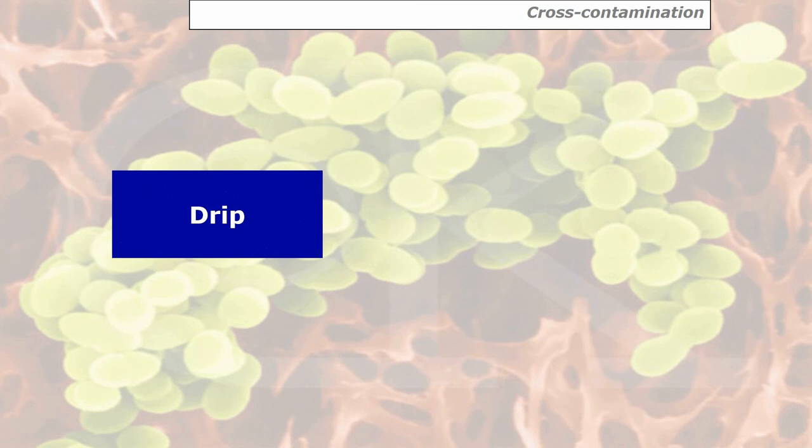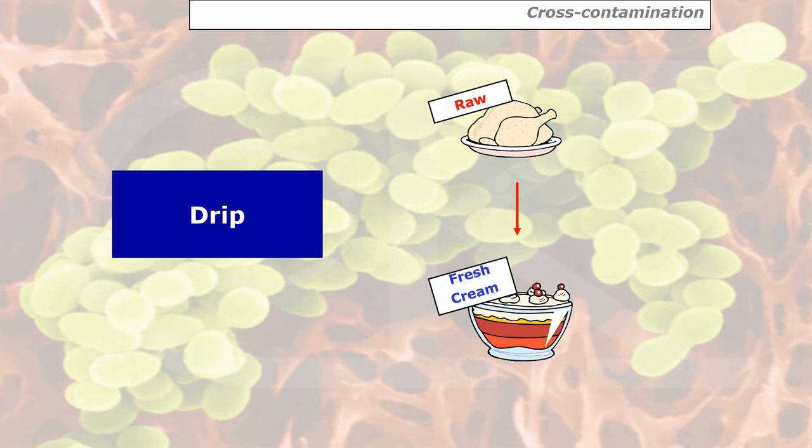Another example of cross contamination is drip — for example, raw meat juices dripping onto high-risk food. As mentioned earlier with the fridge, always make sure raw food is kept in the bottom part of the fridge in a covered container, and any high-risk food is stored above that.